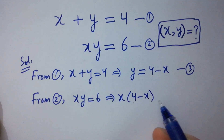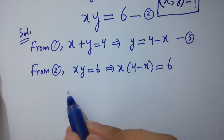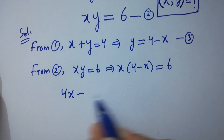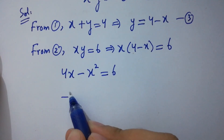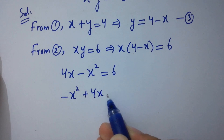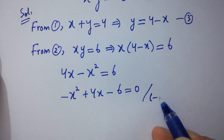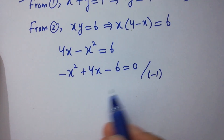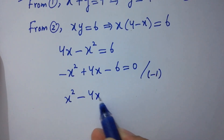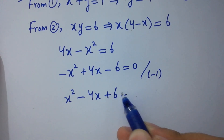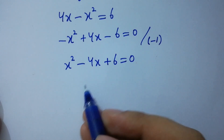Expanding: 4x minus x squared equals 6, which gives minus x squared plus 4x minus 6 equals 0. Dividing both sides by minus 1, we get x squared minus 4x plus 6 equals 0. This is our quadratic equation.